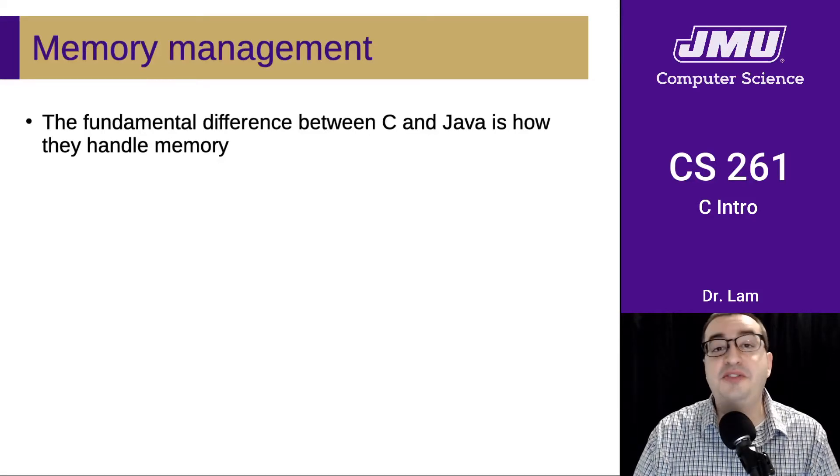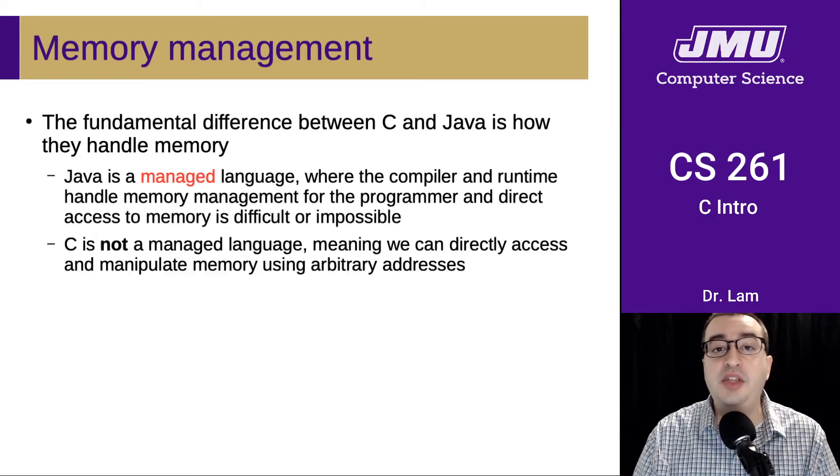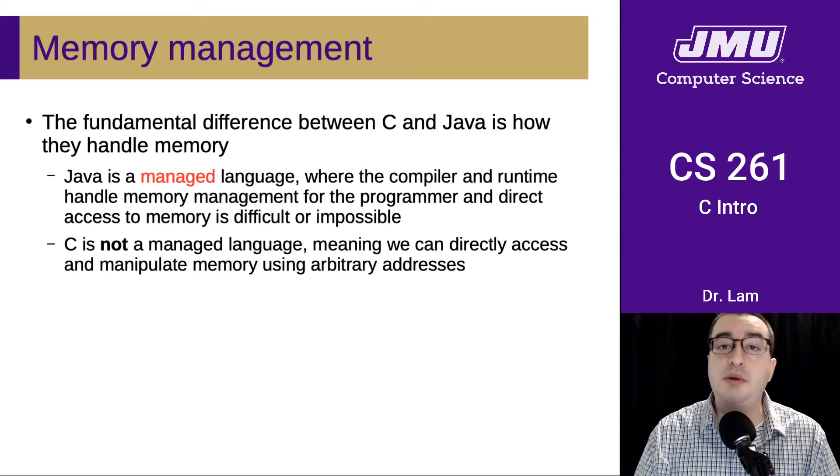So here we come to the fundamental difference between C and Java, which is how they handle memory. Java is inherently a managed language, meaning that the compiler and the runtime system handle all of the memory management for the programmer.